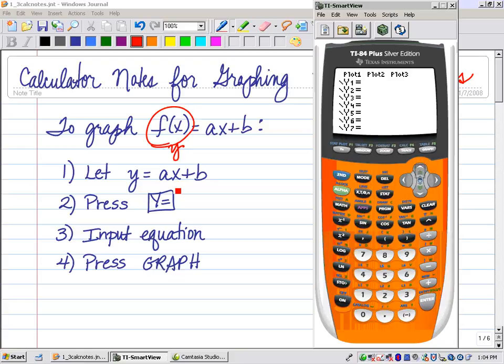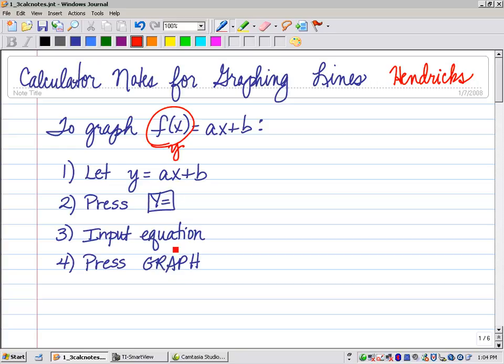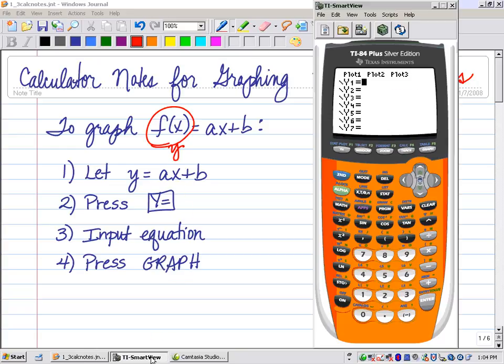Now, to get the variable x, I just want to play around with this for a moment. This x, t, theta, n is your letter x. Now, you can also do the alpha key and do the x from here, but I would suggest that's too long to do. Let's just get familiar with that.